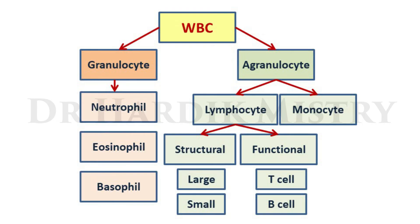WBCs are of two types: granulocytes and agranulocytes. Granulocytes include neutrophils, eosinophils, and basophils. Agranulocytes include lymphocytes and monocytes. Lymphocytes are divided structurally into large and small lymphocytes, and functionally into T-lymphocytes and B-lymphocytes. Lymphocytes originate in bone marrow; those that migrate to the thymus gland for maturation become T-lymphocytes, while those that mature within the bone marrow become B-lymphocytes.